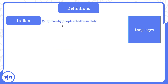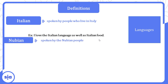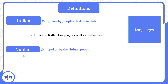Italian is spoken by people who live in Italy. Example: I love the Italian language as well as Italian food — بحب اللغة الإيطالية وكمان الأكل الإيطالي. Nubian — اللغة النوبية — spoken by the Nubian people; you can hear the Nubian dialect in Nubia.